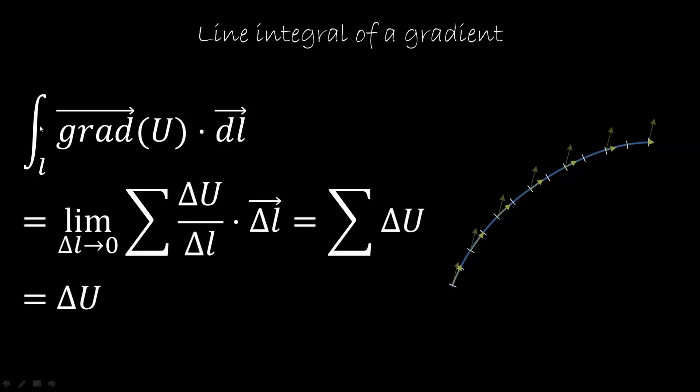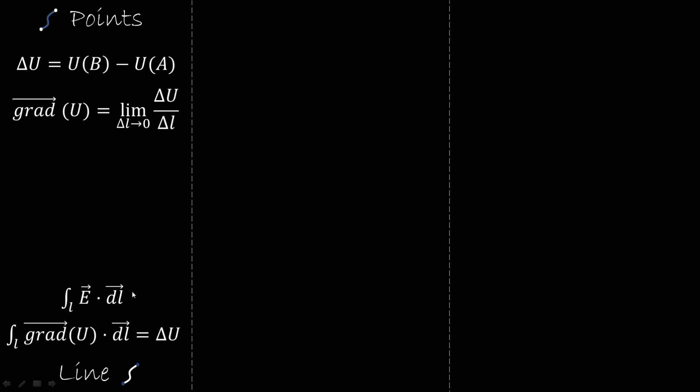So what we see is that the line integral applied to the gradient gives us back the difference operator, which is the non-local counterpart of the gradient. So to sum up, we work with lines, we defined our line integrals, and we saw that the line integral of the gradient gives us back the difference. So we go from our infinitesimal operator to our finite operator.